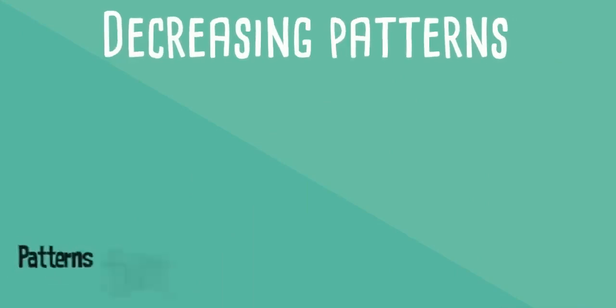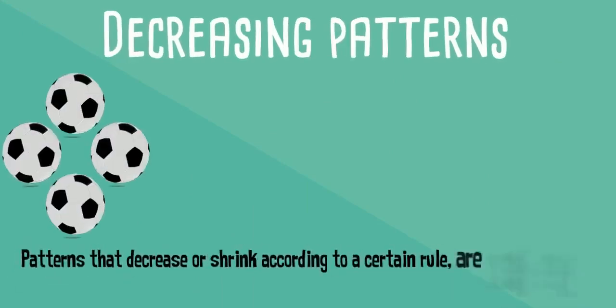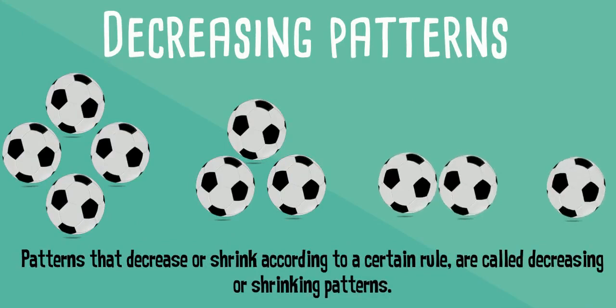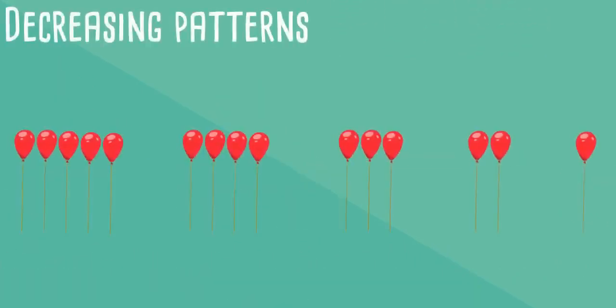Patterns that decrease or shrink according to a certain rule are called decreasing or shrinking patterns. We can see the first bunch has 5 balloons.